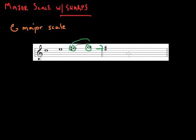And make sure you don't forget the order of the sharps. Father, Charles, goes down and ends battle. F, C, G, D, A, E, and B. Those are all sharps.